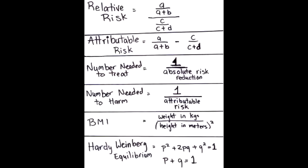What is the equation of number needed to harm? The equation of number needed to harm is 1 divided by attributable risk.